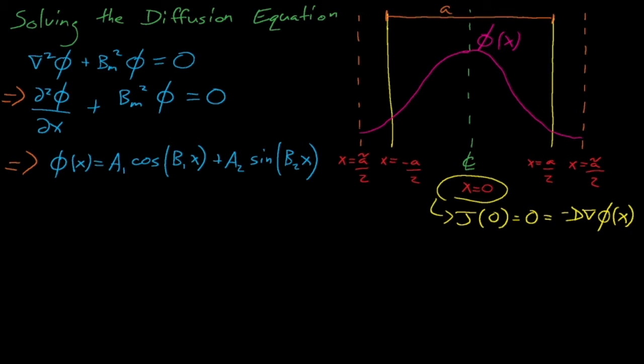Since the derivative of sine is cosine, and the cosine of 0 equals 0, there is no possible way that the neutron current or that the flux's derivative could equal zero at the center of the slab if the sine term exists. Thus, the A2 constant must equal zero, which means that the flux in our slab is simply this cosine function.